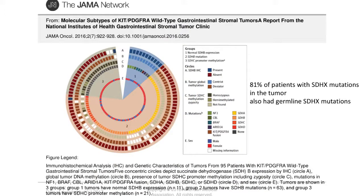I think this slide really highlights the value of collaboration between the patient community and the provider community to gain information in a rare subtype of GIST. It was really through the collaboration of creating the NCI Pediatric GIST Clinic that we were able to learn this much about this very rare subtype of disease. It's also helped us understand that in this population with SDH-deficient GIST, we have to start thinking novelly about strategies to treat a disease which has a different driver than KIT-based GIST.